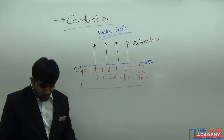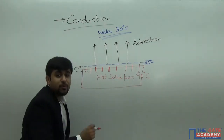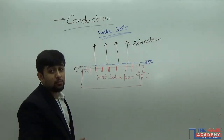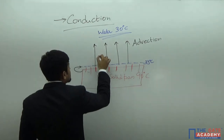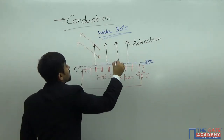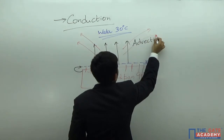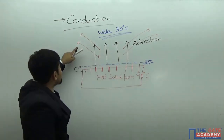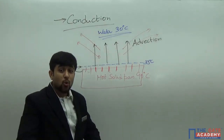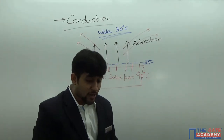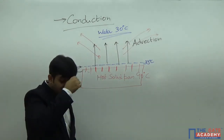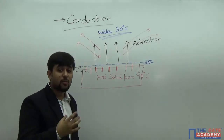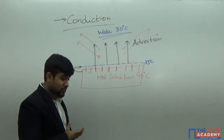Apart from this bulk motion, the molecules of the fluid are also moving randomly, so some molecules may diffuse out of the bulk stream, again resulting in energy transfer. The whole scenario at the solid-fluid interface involves conduction at the immediate layer, followed by advection in the bulk mass and some diffusion. This entire process — conduction at the immediate fluid layer near the solid surface combined with bulk advection and diffusion — is known as convection.